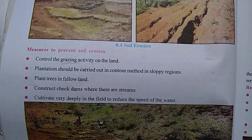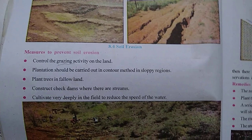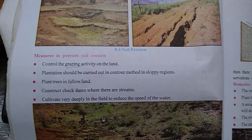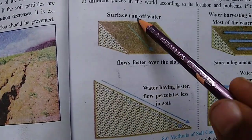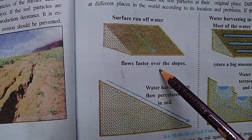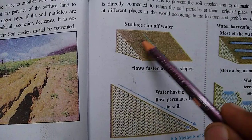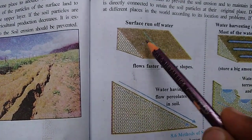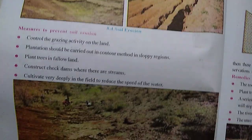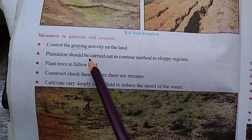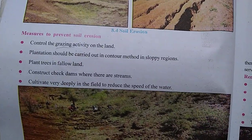The second point: plantation should be carried out using the contour method in slopey regions. In a slopey region, water flows faster from top to bottom because of gravitational force, making soil erosion very fast. If you go for plantation on the slope, it decreases the speed of water. If the flow becomes slow, then erosion is not possible. So, keeping this in mind, you should go for plantation on slopey regions.